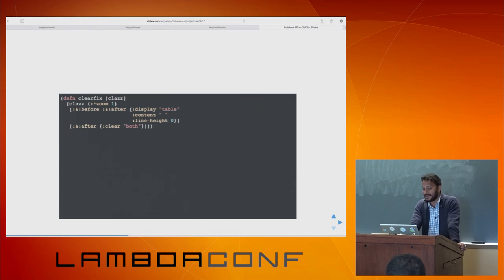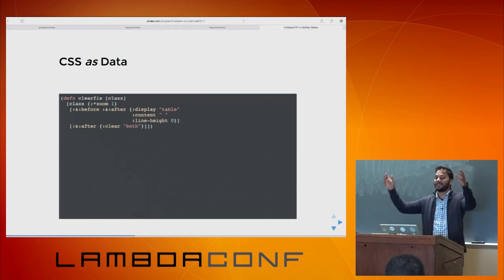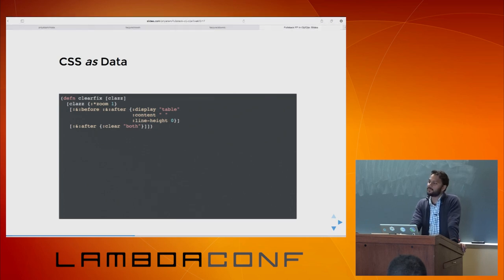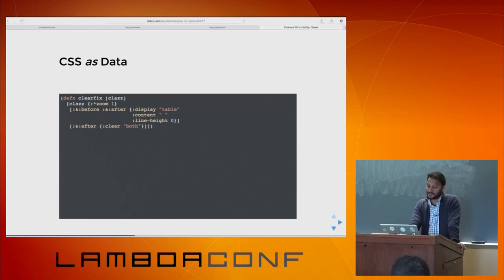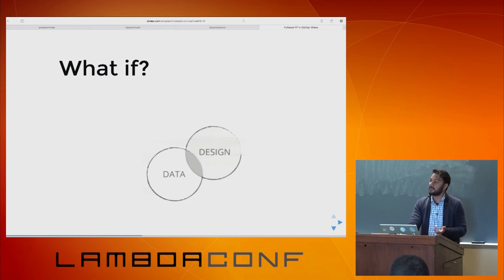CSS has data too, and this completes my obsession with finding a unified theme. Clearfix — if you've done CSS, this is one of the most frustrating concepts for beginners. I'd like to put everything in a pure function. Clearfix is a function that returns this class. If you've seen HTML as data, this is the same concept. How can we do data in design? I think there are fascinating things that can happen at that intersection.